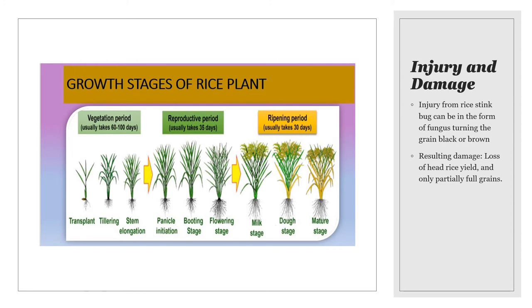The rice stink bug feeds by piercing the grain with its needle-like mouthpart called the proboscis and extracting milk from developing grains, like in the milk stage, causing damage in the form of a reduction in the amount of head rice formed. The dough stage is also susceptible to peck injury caused by a fungus inserted into the grain through rice stink bug feeding.